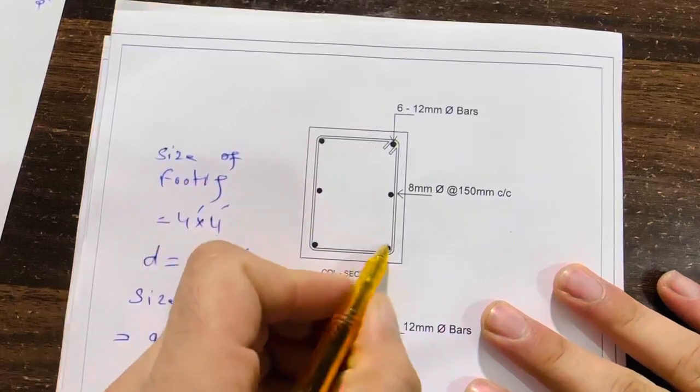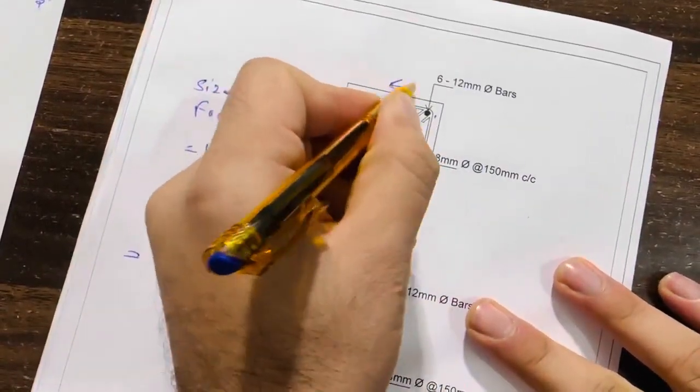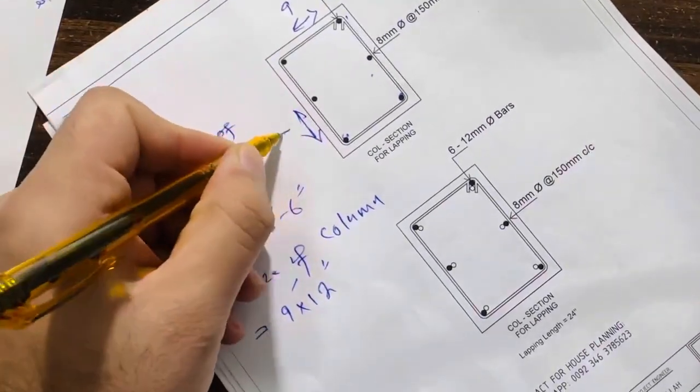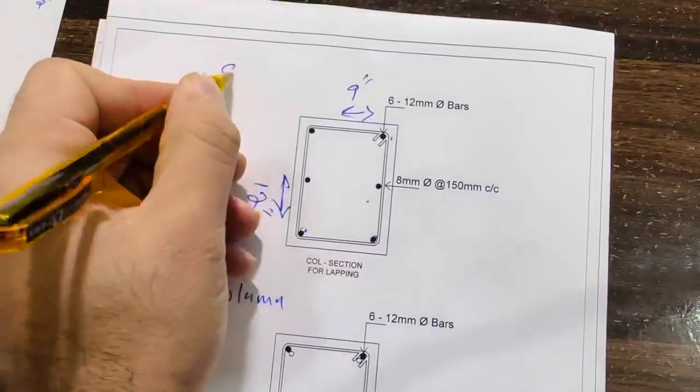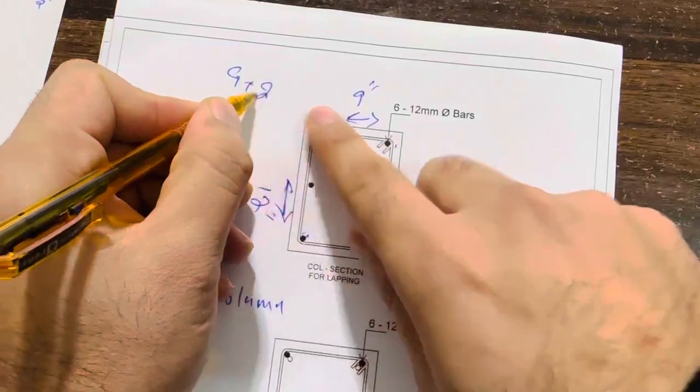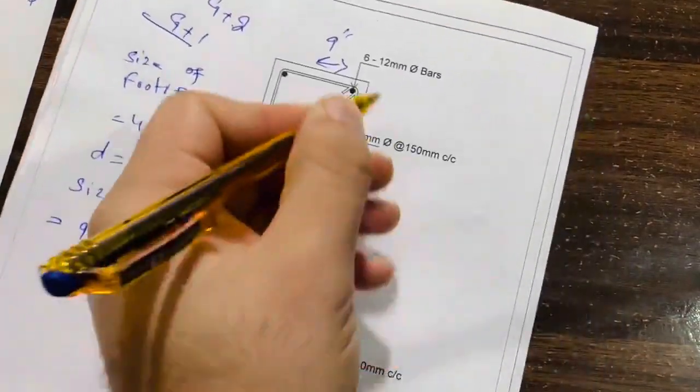You can see clearly one, two, three, four, five, six numbers, and this is 9 inches and the depth here is 12 inches. This is especially for G+2, but I did normally for G+1. It means for a double story.